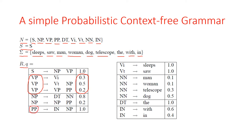For example, the prepositional phrase has only one rule, so its probability must be one. For noun phrase, there are two rules that sum to one. Looking at the right-side table, the four nouns also have probabilities summing to one, and the two prepositions likewise sum to one.